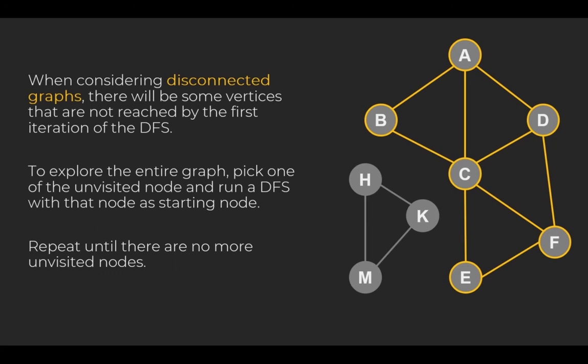When considering this disconnected graph, there will be some vertices that are not reached by the first iteration of the DFS. For example, using the graph shown on the right-hand side, and vertex A as the starting point, the vertices H, K and M will not be visited. To explore the entire graph, pick one of the unvisited nodes, for example K, and run the DFS with K as the starting node. Repeat until there are no more unvisited nodes.